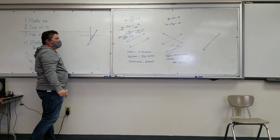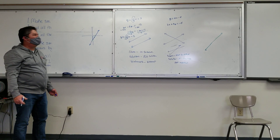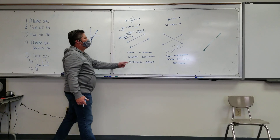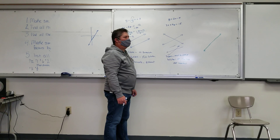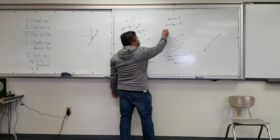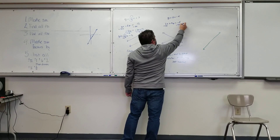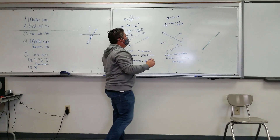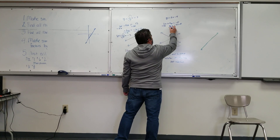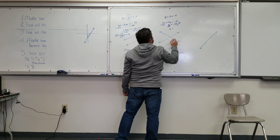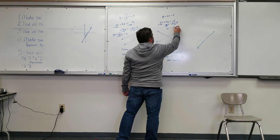For the second equation I have to solve for y first. What should I do first to get y by itself? Subtract three x from both sides. Now I have four y equals negative three x plus something. Then divide both sides by four. It's going to give me negative three-fourths x.